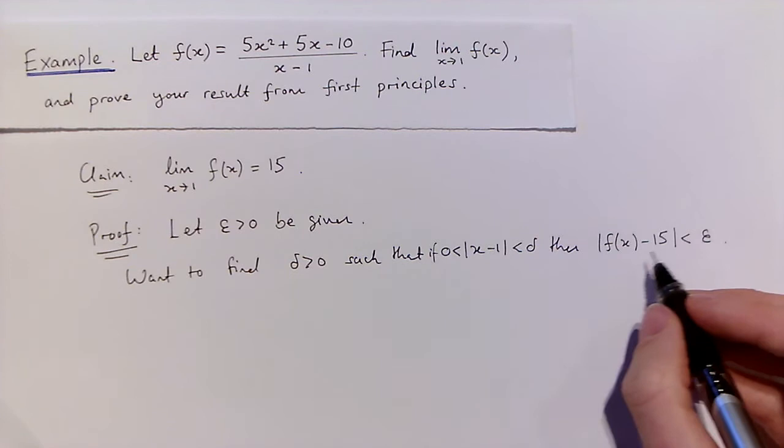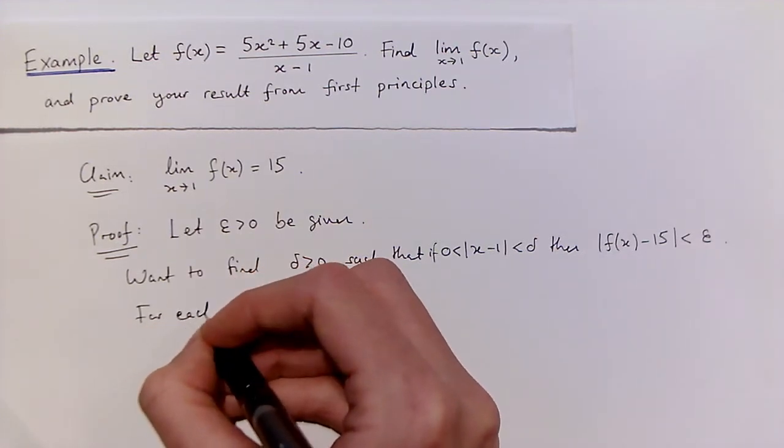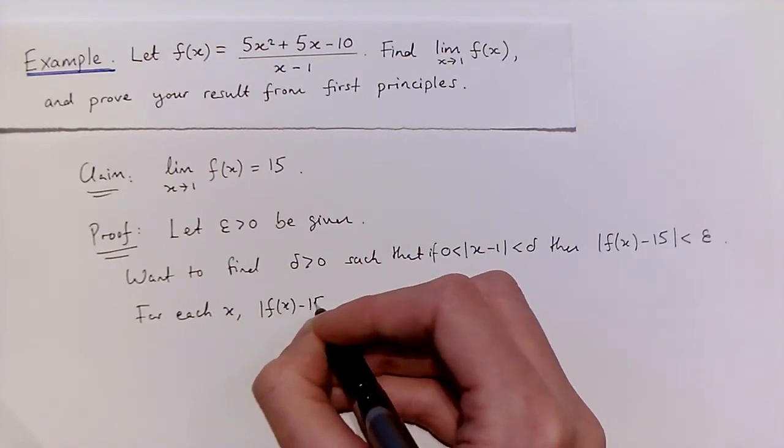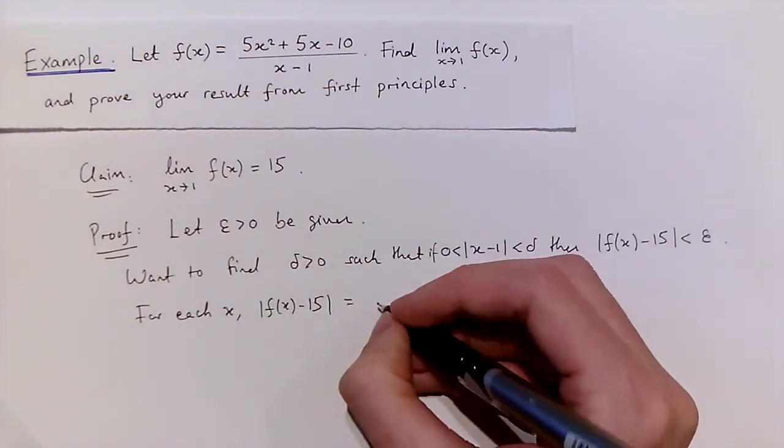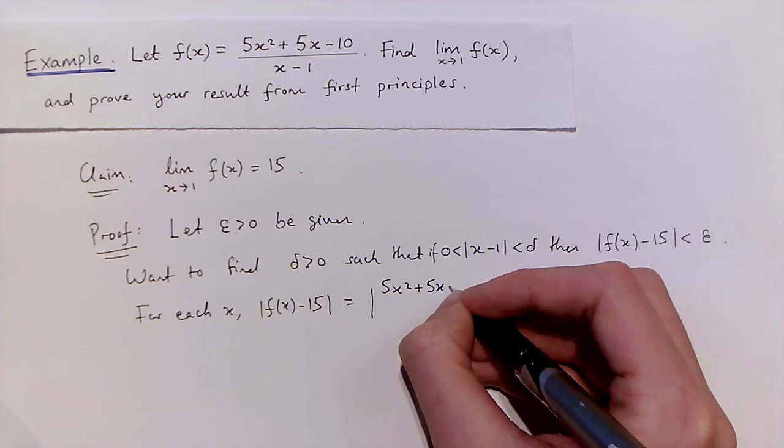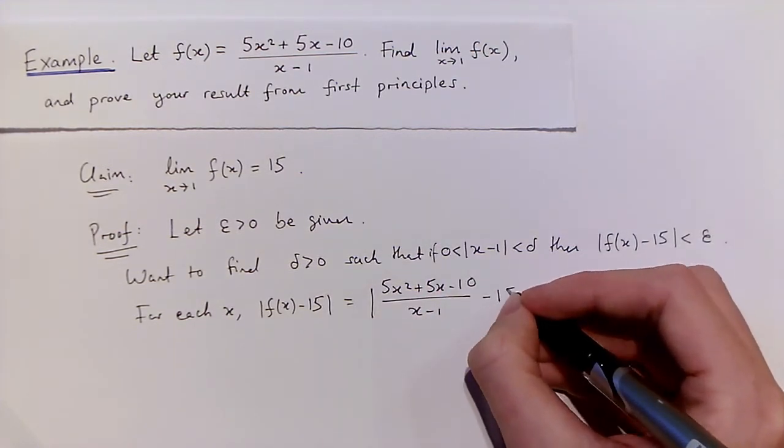Well, what is the distance between f(x) and 15? For each x, the distance between f(x) and 15. Well, remember our definition of f(x) given up here. This is just going to be |(5x² + 5x - 10)/(x - 1) - 15|.